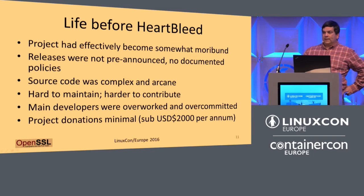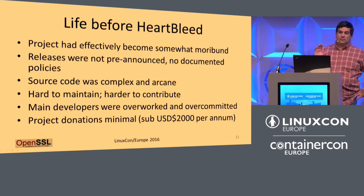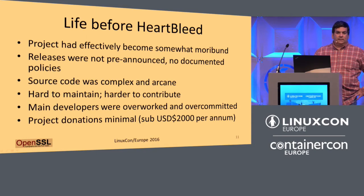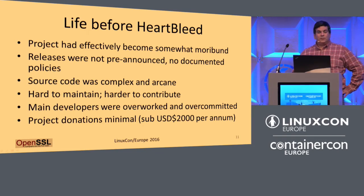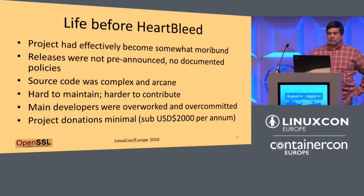The main developers were overworked and overcommitted. At the time of Heartbleed, there were basically two developers barely making enough money to live. They had to go outside for other funding. Donations were minimal — this was an open source project that barely got $2,000 a year to keep going. People were pounding on them, throwing patches and code, screaming because their bugs didn't get fixed. It was just two guys, or two and a half, or three depending on how you counted it.